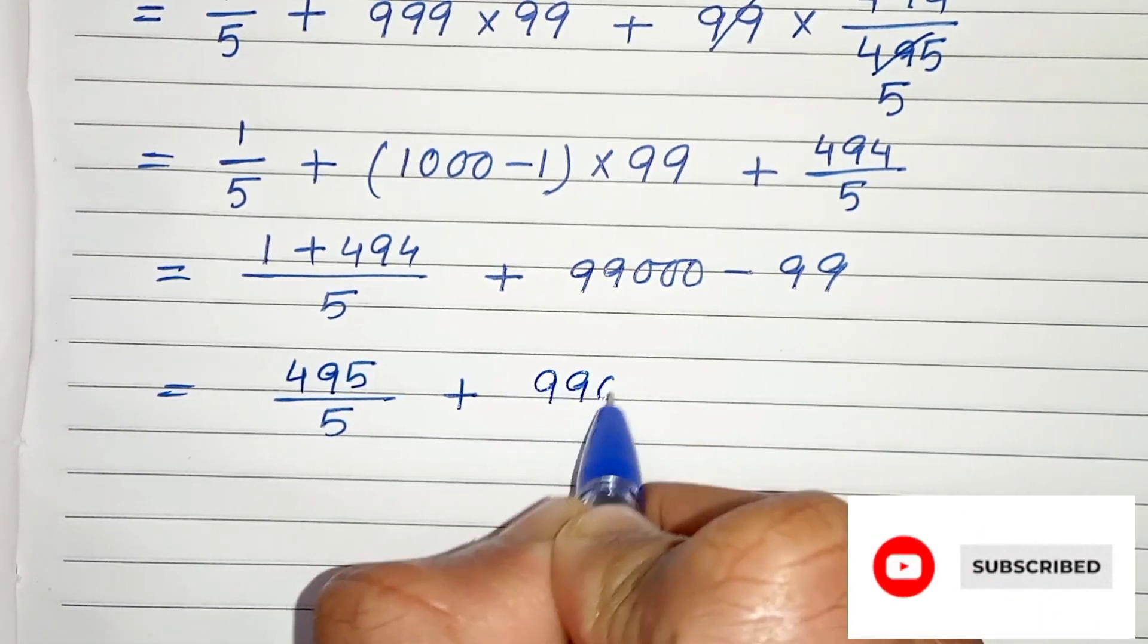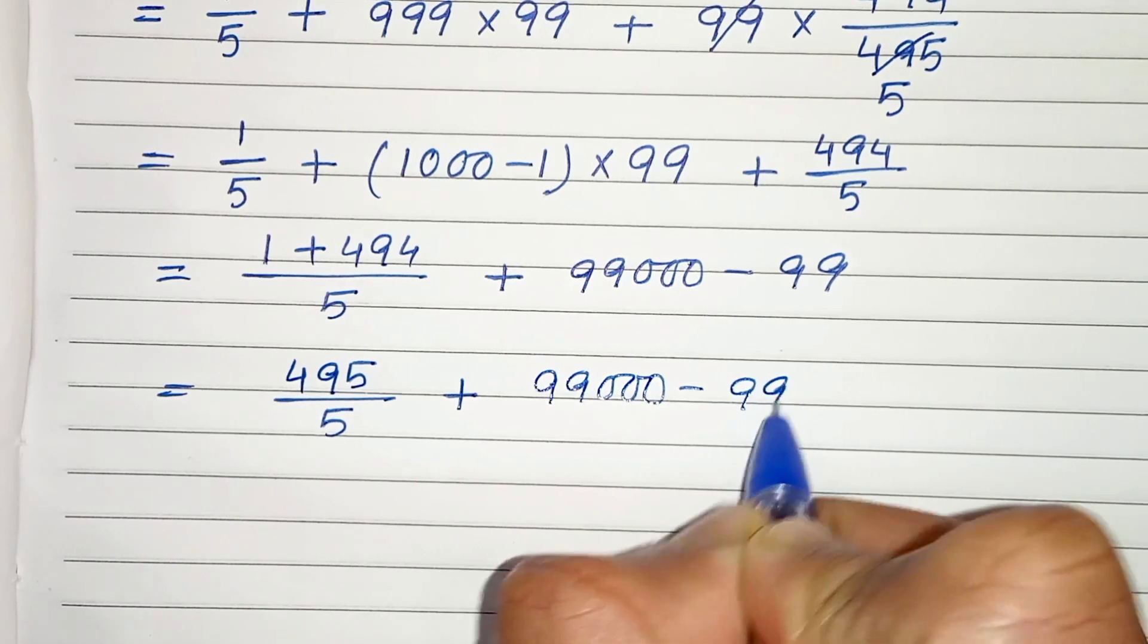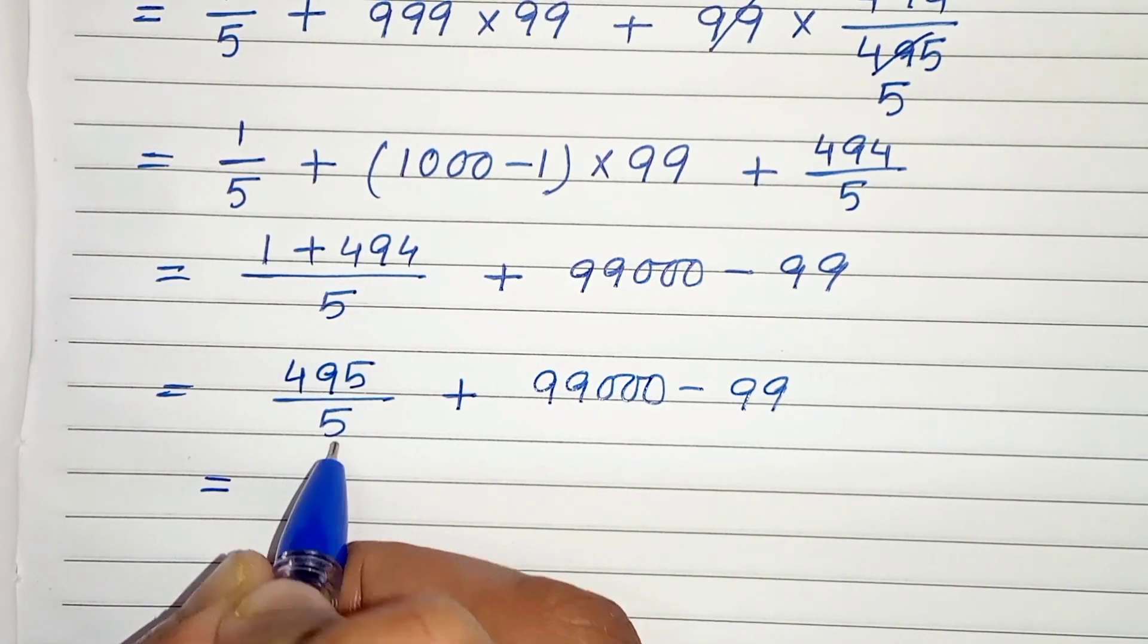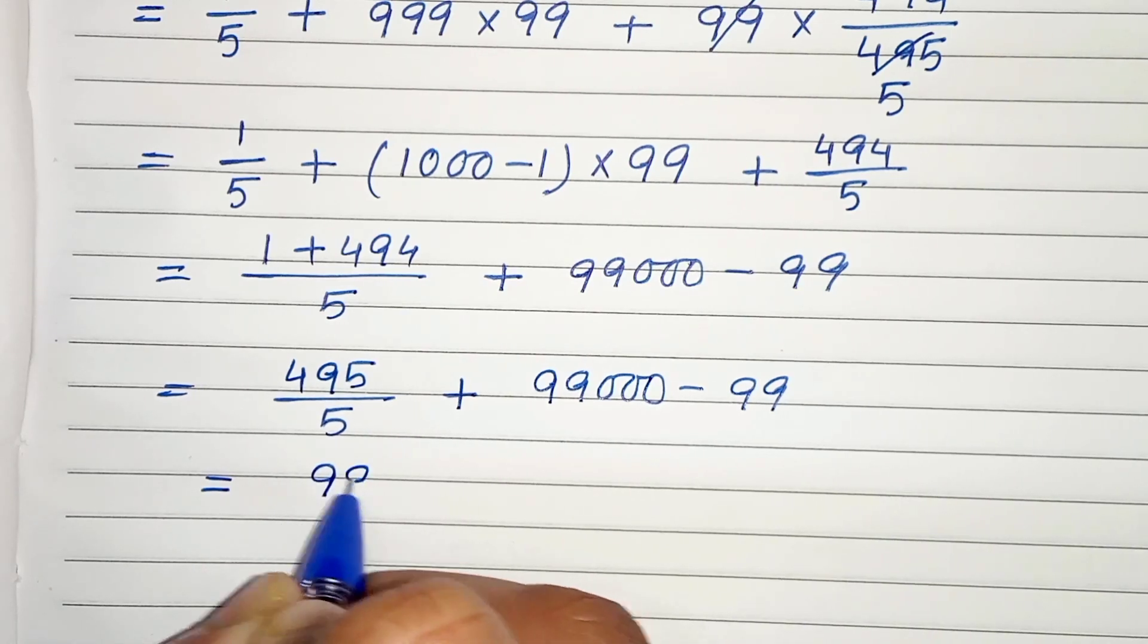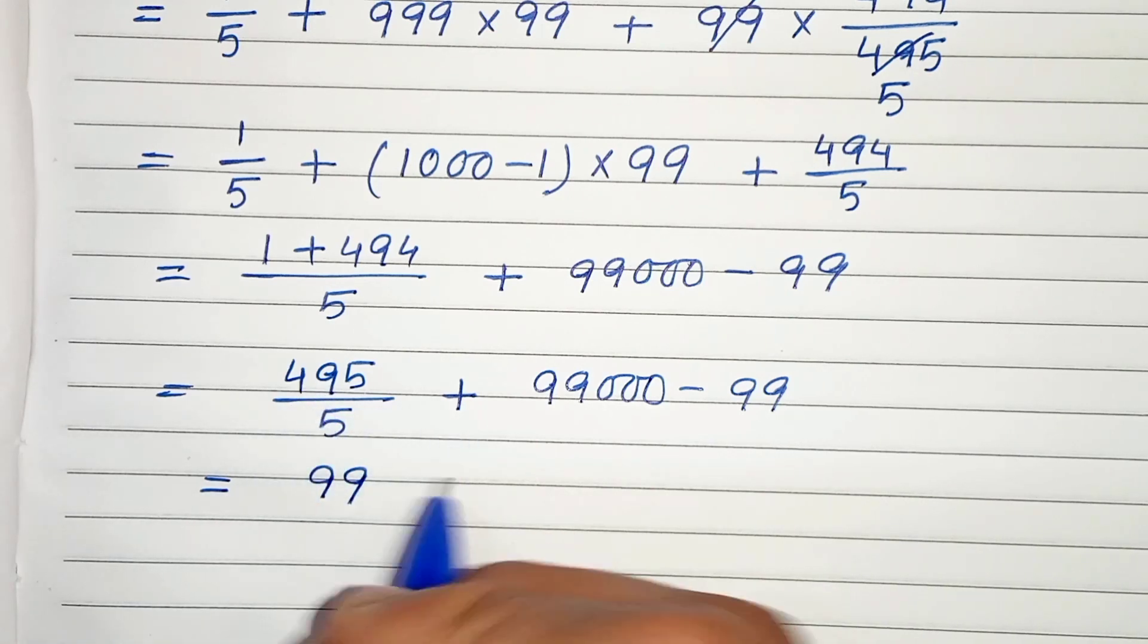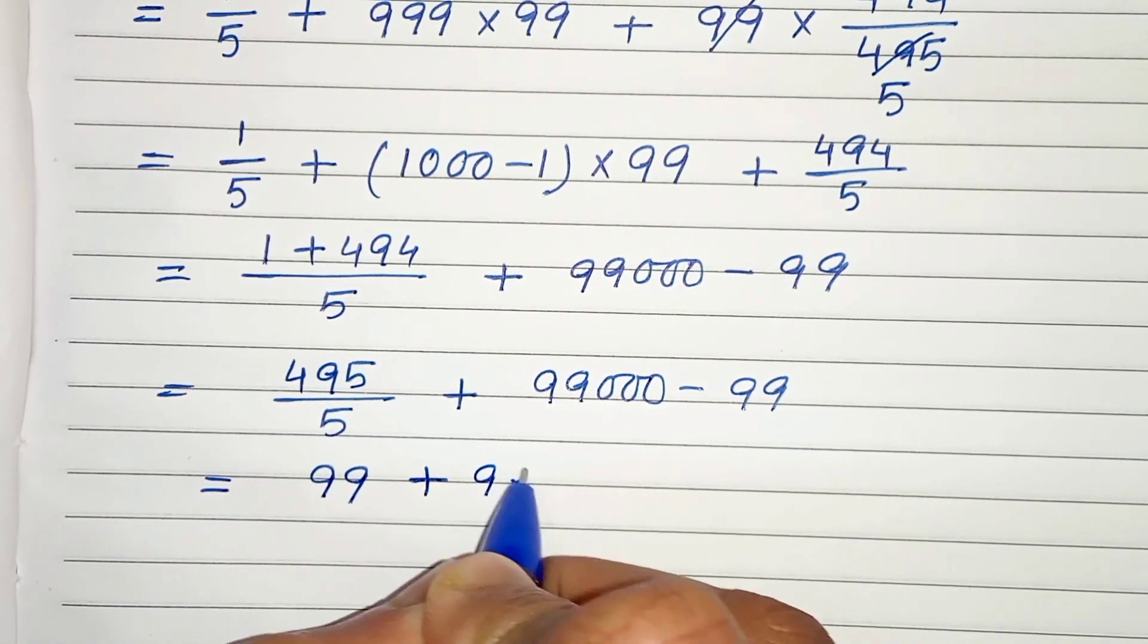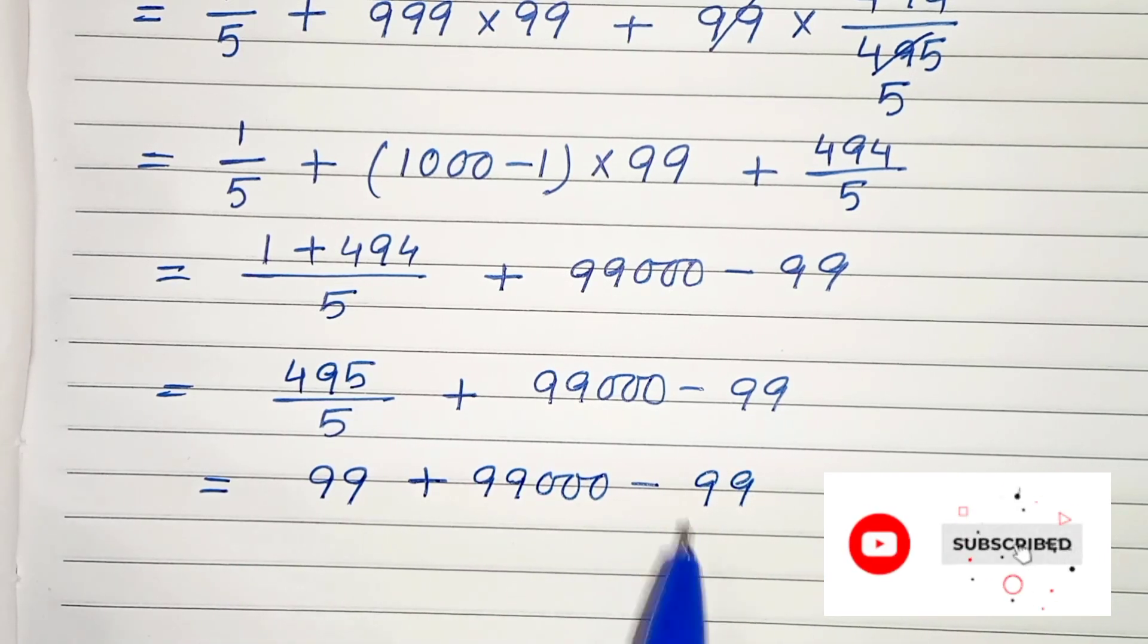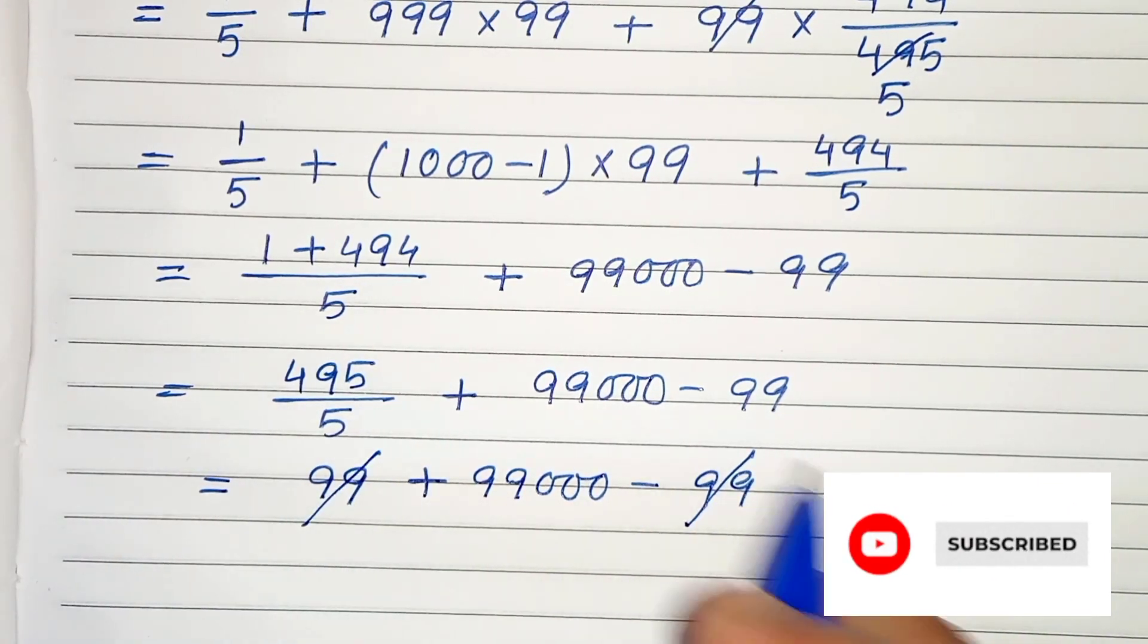Now 495 can be divided by 5, so we will get 99. So 99 plus 99,000 minus 99. Plus 99 minus 99 gets cancelled.